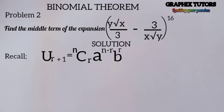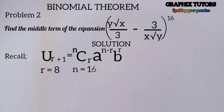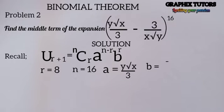In this formula, r is the term number minus 1. Since we want the 9th term, r equals 9 minus 1, which gives us r = 8. Our n is 16, that is the power. Our a is y times root x over 3 — that is the first term inside the expression — and b is minus 3 over x times root y.